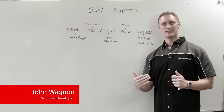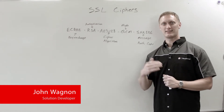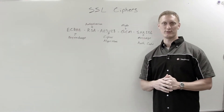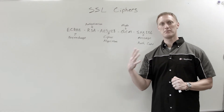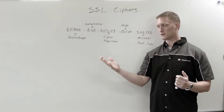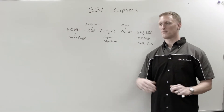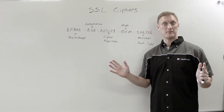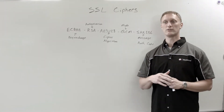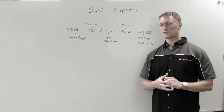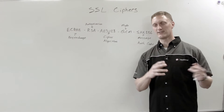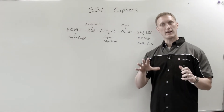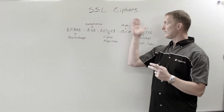Hey everybody, John Wagnon here with Dev Central and this is Whiteboard Wednesday. Today we're going to talk about SSL ciphers. To give a little background — you may remember stories about the NSA doing wiretapping or government eavesdropping. A lot of people got upset about that. Even Google said, 'If you're going to do that, we're just going to encrypt everything.' So a lot of people have gone to SSL traffic to start encrypting all their internet traffic.